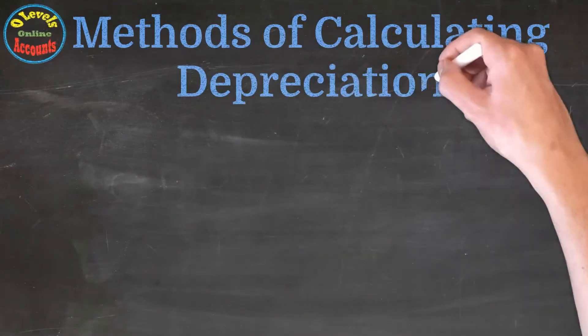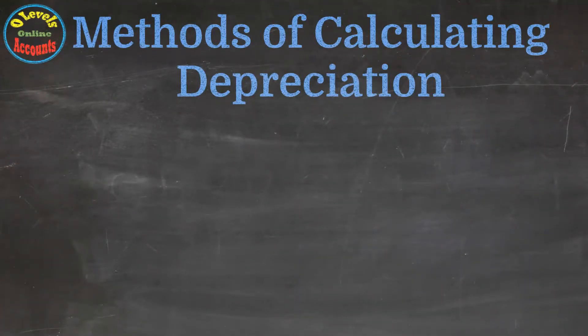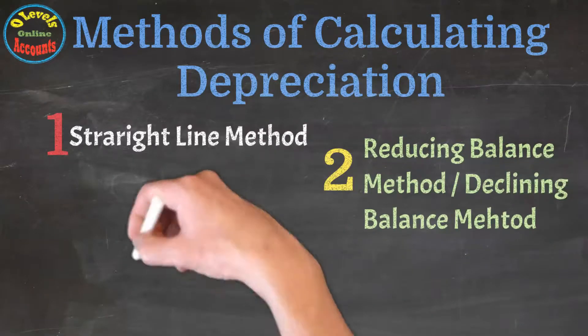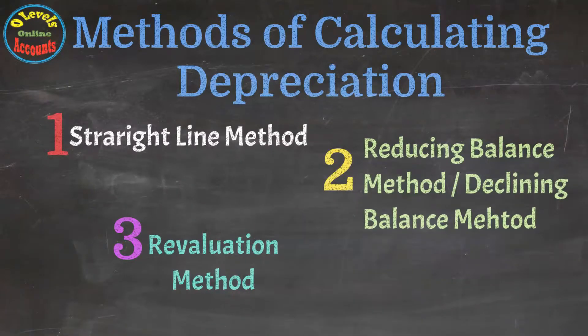There are three most popular methods to calculate depreciation. Number one is straight line method. Number two is reducing balance method or declining balance method. And finally, revaluation method. We will discuss these methods one by one.